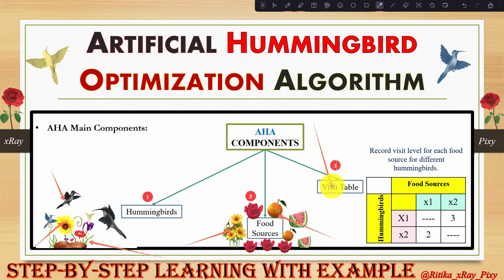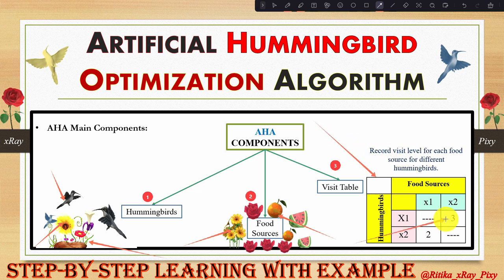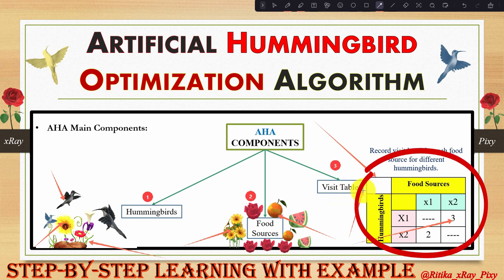The third component is the visit table, which records the visit level for each food source for different hummingbirds. To obtain more nectar, hummingbirds tend to visit food sources with the highest nectar refilling rate. The visit table denotes the amount of time since a hummingbird last visited a food source, and it is updated at each iteration so each hummingbird can find its target food source.